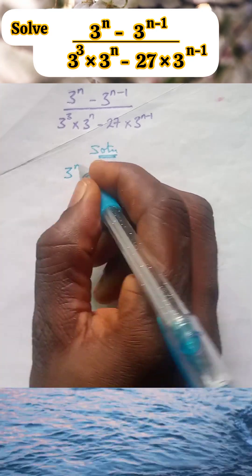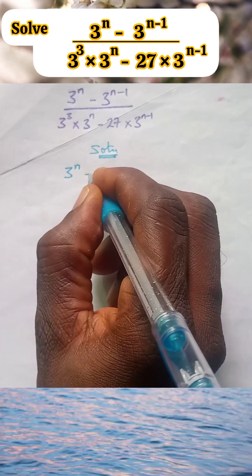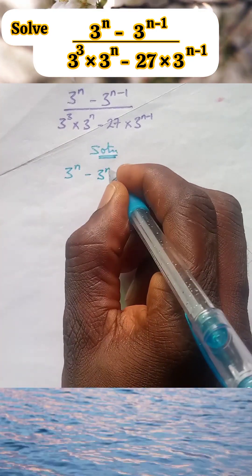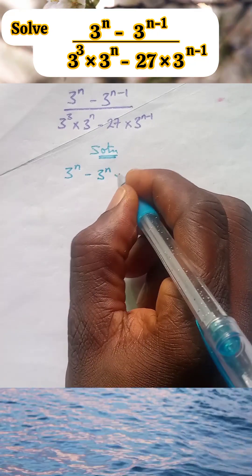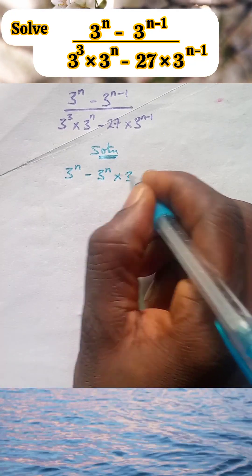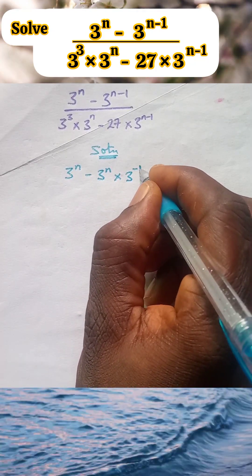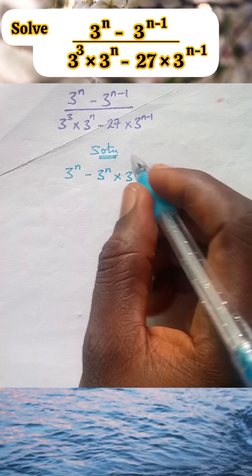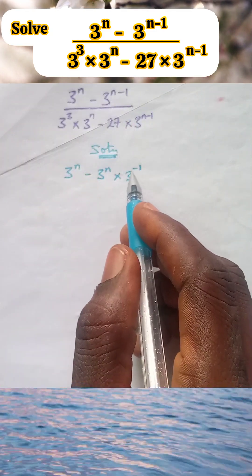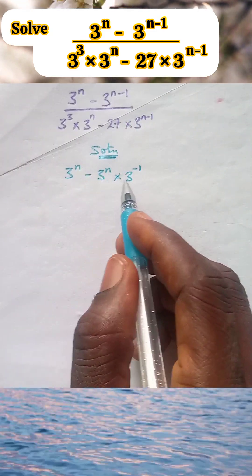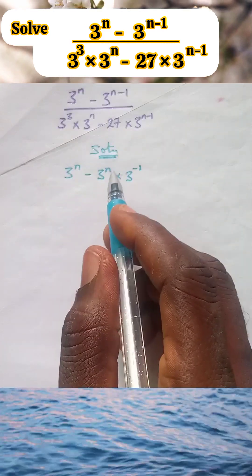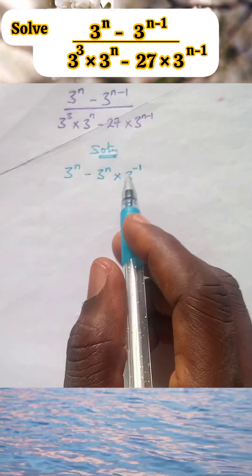3 raised to the power n, minus 3 raised to the power n times 3 raised to the power minus 1. What we just did, we expanded this to this. If you multiply this, it will give you 3^n raised to the power minus 1.